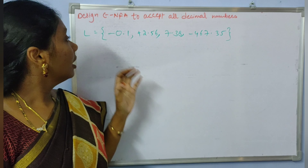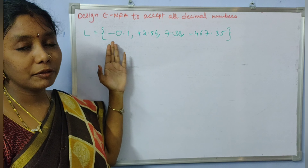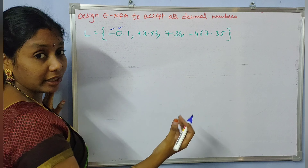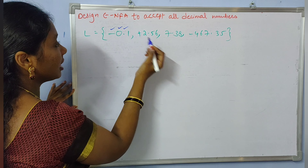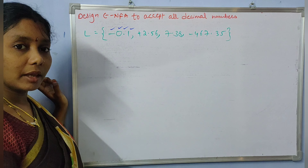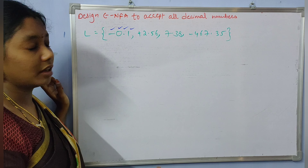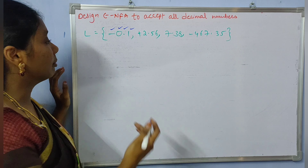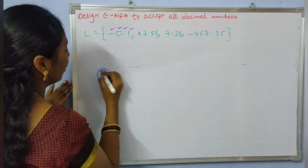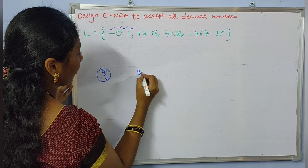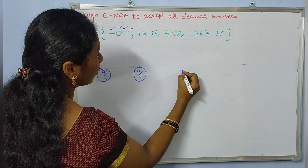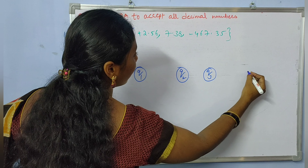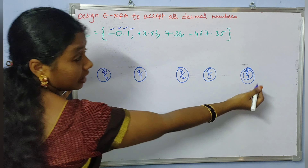For this problem we need to construct the epsilon-NFA. Let us consider the minimal string. If you observe, the minimal string consists of at least one digit before the decimal point, the decimal point itself, and at least one digit after the decimal point. So the length of the minimal string is four, and that's why we need to take five minimal states.